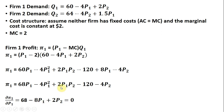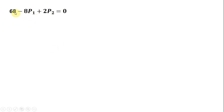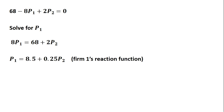The 2 times P subscript one times P subscript two — the partial derivative of this with respect to P subscript one — just leaves us the 2P subscript two term. Again, the partial derivative of the profit function with respect to P subscript one, setting it equal to zero. Now we're going to solve for P subscript one, adding 8P subscript one to both sides and dividing everything through by 8. We have this result, and this is firm one's reaction function — the profit-maximizing price of firm one will depend on firm two's price.